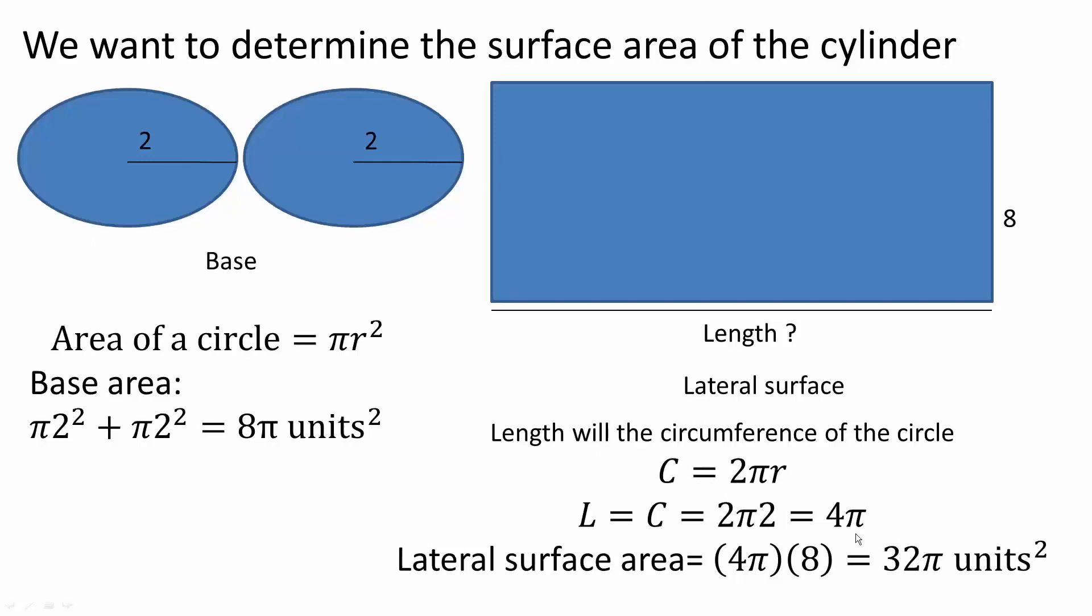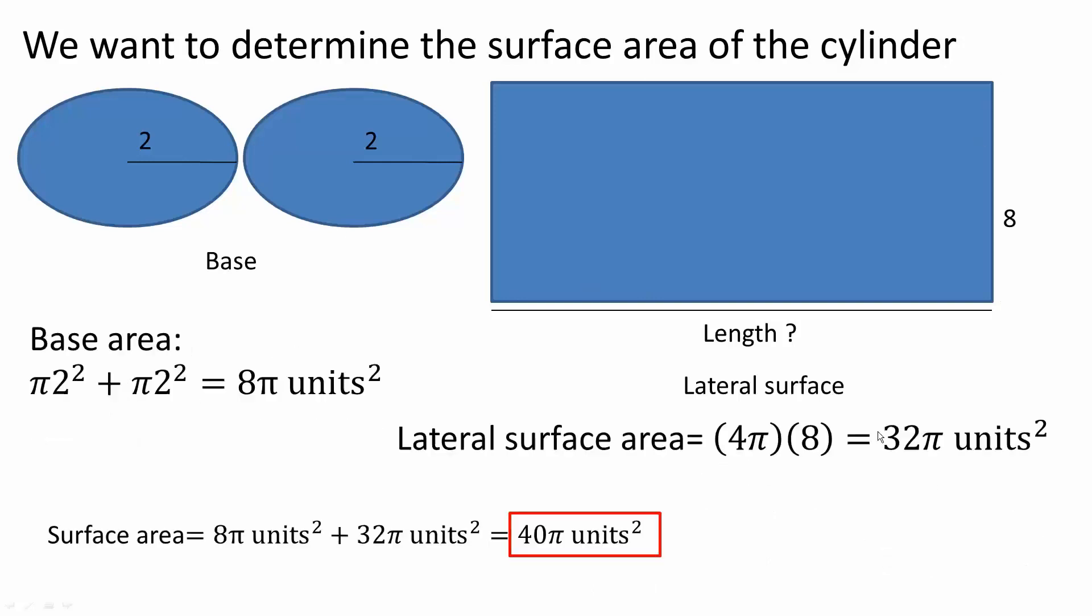Now we know that this distance right here is 4π, and we want to determine the lateral surface area. So 4π times 8 is 32π units squared.